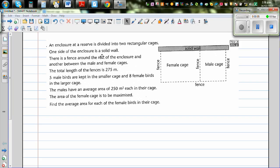An enclosure at a reserve is divided into two rectangular cages. One side of the enclosure is a solid wall. So this is a solid wall. And these are the two cages, one for female and one for male.